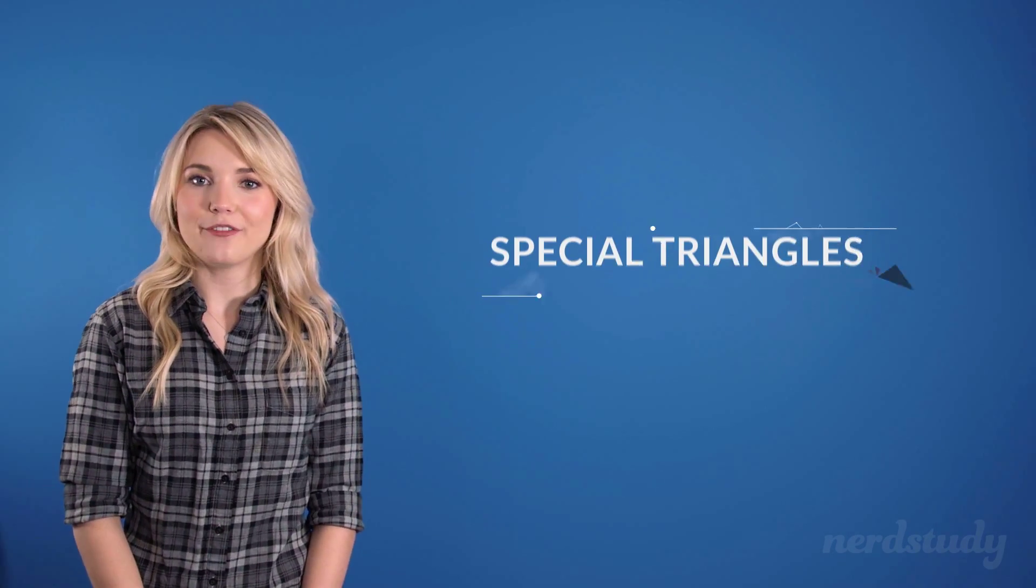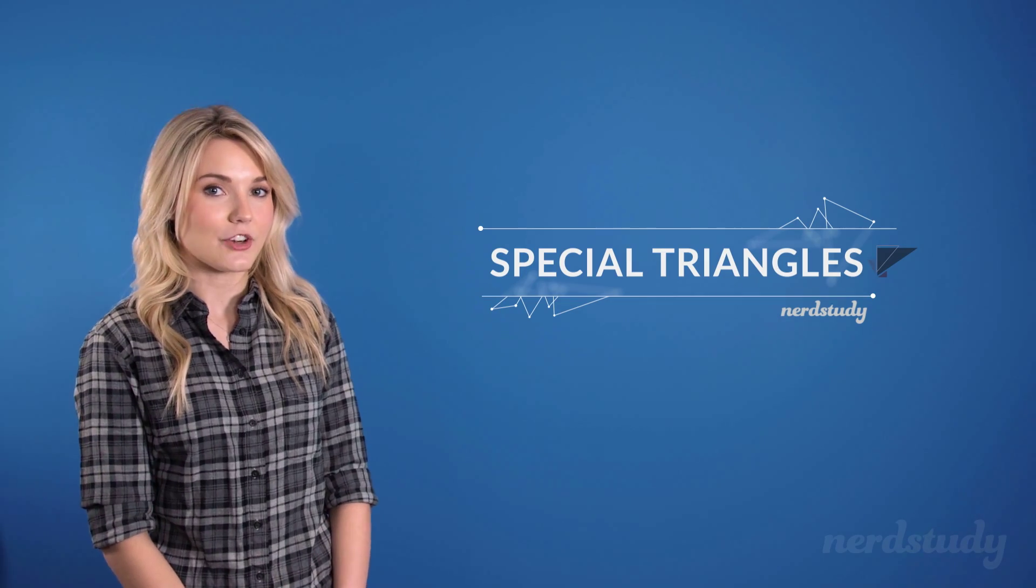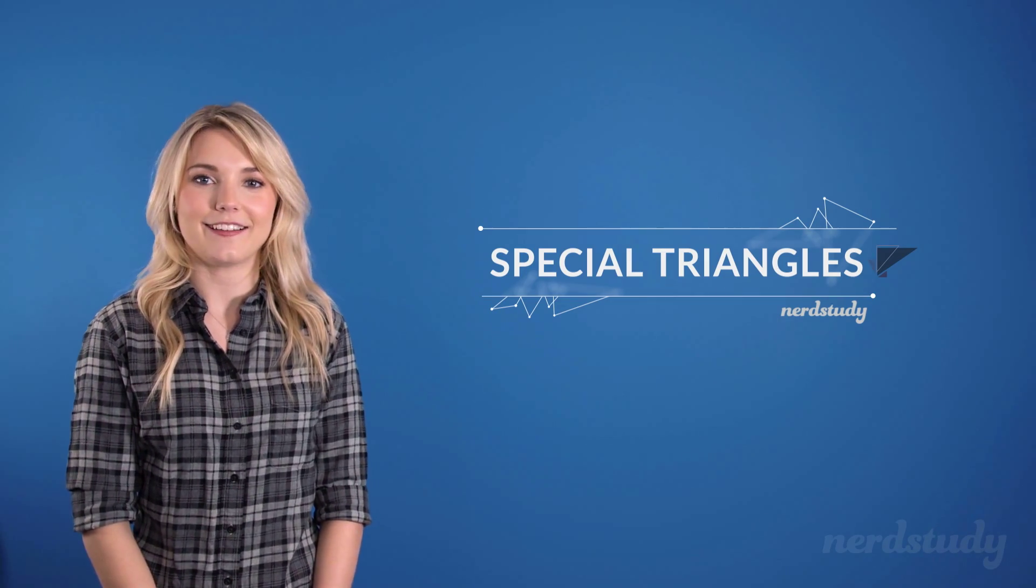In this video, let's review two different types of special triangles, the 30-60-90 triangle and the isosceles triangle.